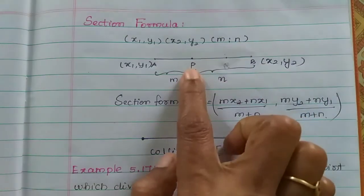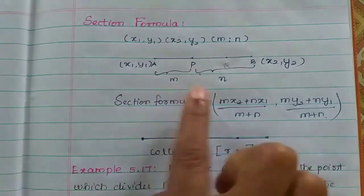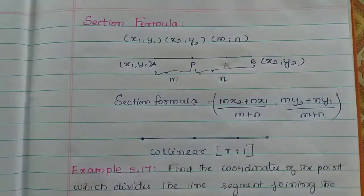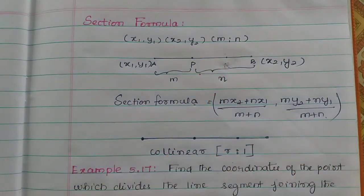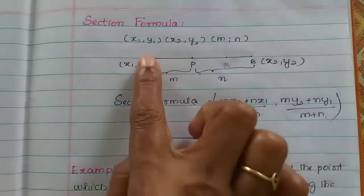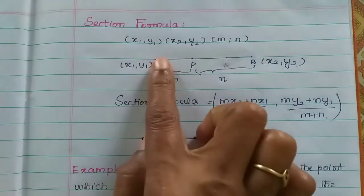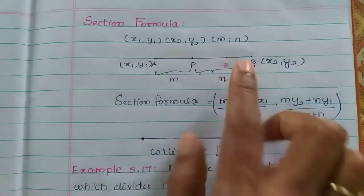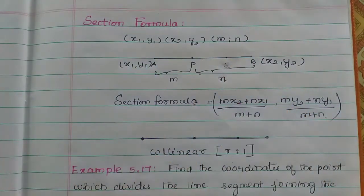This point is correct. The middle point uses the mid-point formula. But if the point is not the middle of the two points, we use the section formula instead. It is not as easy.